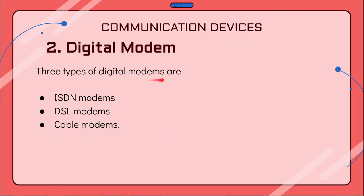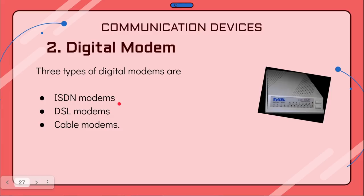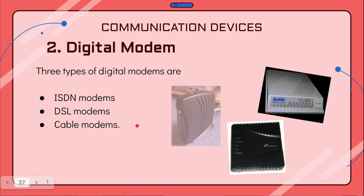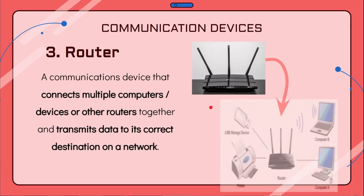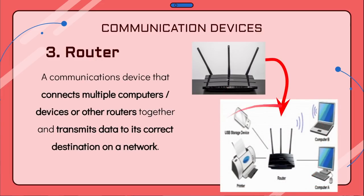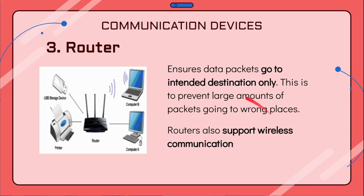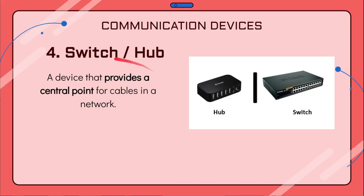There are three types of digital modem: ISDN modem, DSL modem, and cable modem. Next we have the router. Compared to a modem, which can only connect to one device at a time, a router allows multiple computers, devices, or other routers to connect together and transmit data to its correct destination on a network. A router ensures all data goes to its intended destination only, and routers also support wireless communication.